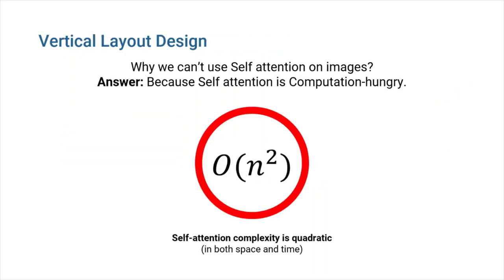So far, we have found the best combination of self-attention and convolution, but we still can't use our newfound architecture on images directly. Why? Because self-attention has a fundamental problem. It's computation-hungry and has a quadratic complexity in both space and time.